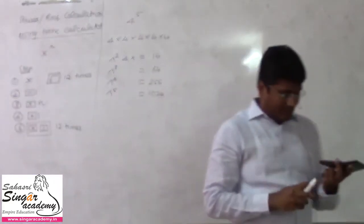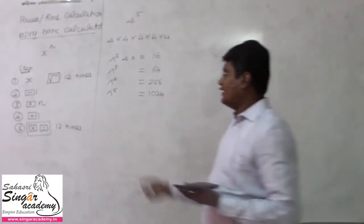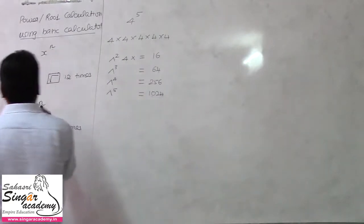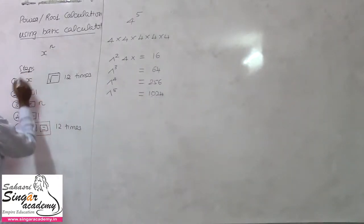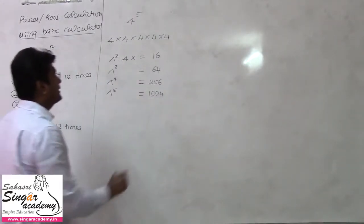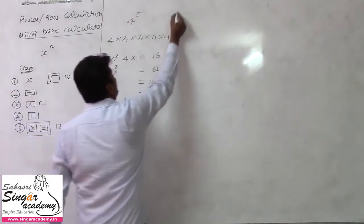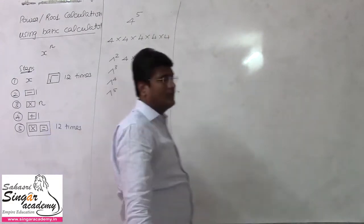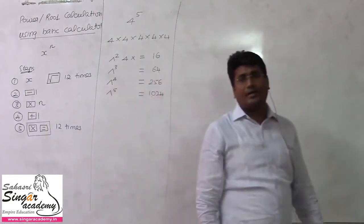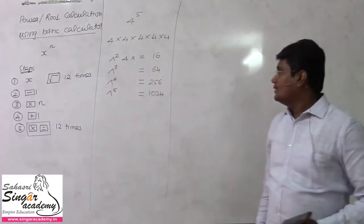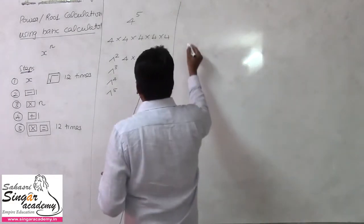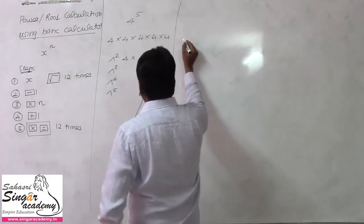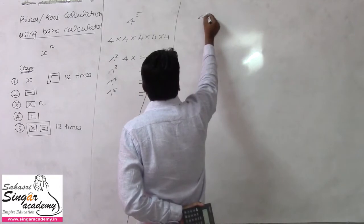But there is one more method given in the steps. If you follow it, you will get the approximate and exact answer. Let me try that approach as well. I am going to work out 4 to the power 5 using this step-by-step method.